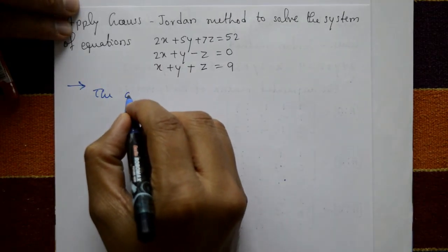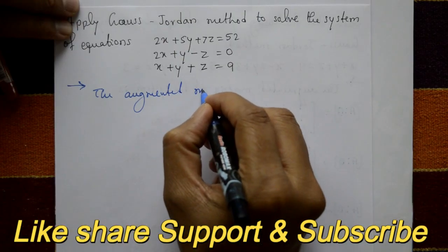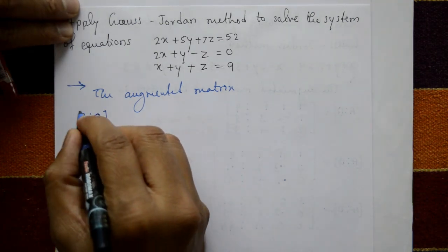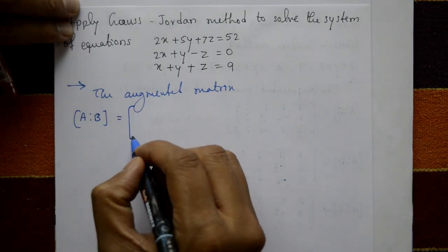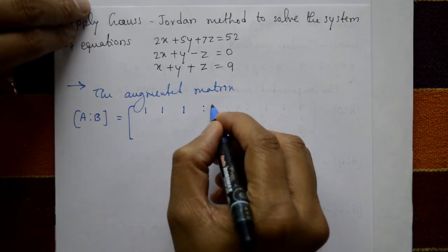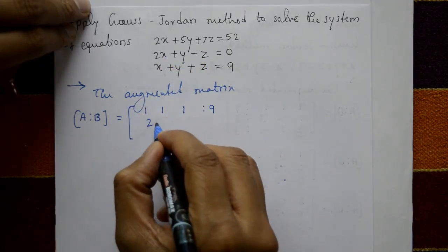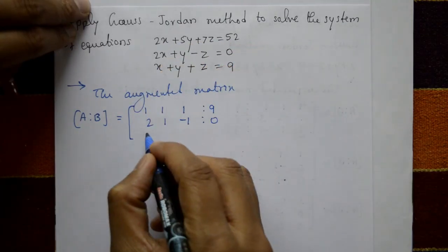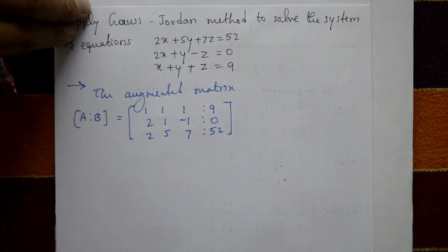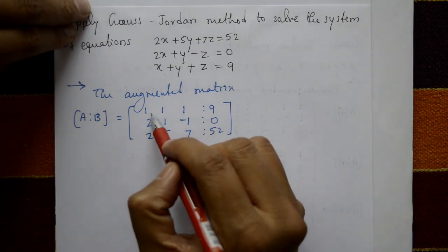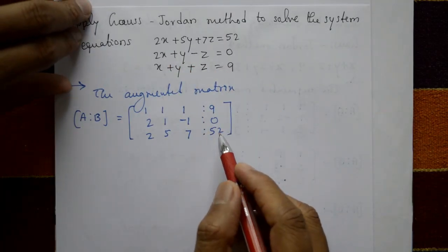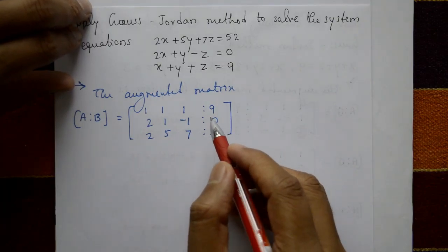First, form the augmented matrix [A|B]. The coefficients of x, y, z give rows: [1, 1, 1 | 9], [2, 1, -1 | 0], [2, 5, 7 | 52]. The first row is the third equation, the second row is the second equation, and the third row is the first equation.